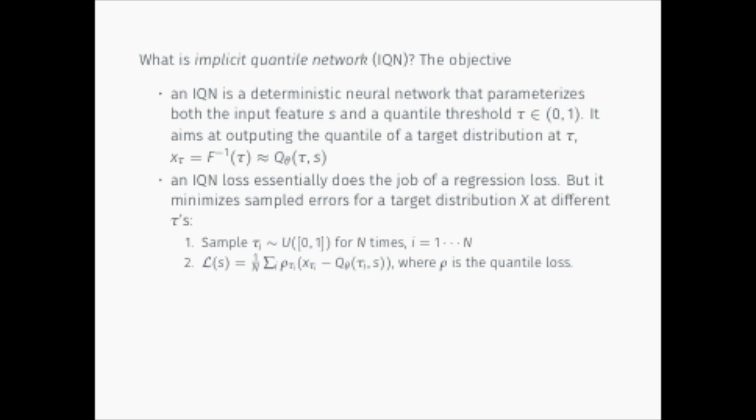For instance, we uniformly draw n samples of tau from the unit interval, and the IQN outputs the quantile at each tau_i, and the final objective function is the average over all the quantile losses.